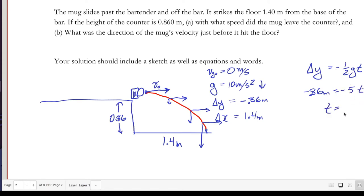So t is equal to the square root of 0.86 over 5, which works out to a familiar time, 0.41 seconds. Now we can use this time as an intermediate result to figure out how fast this had to be moving.